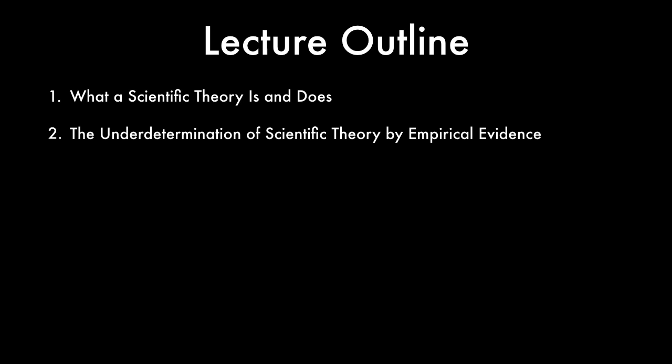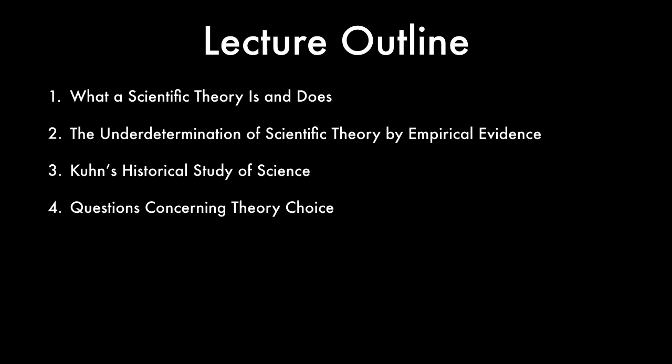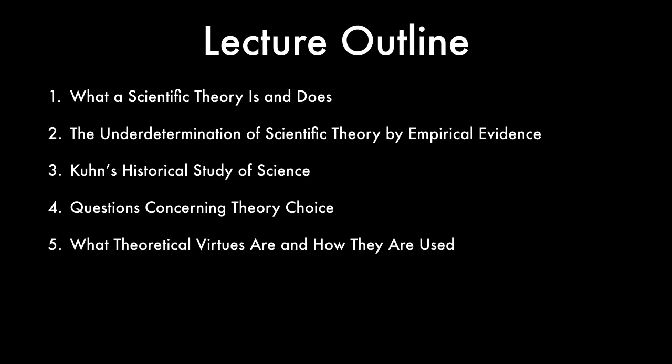Topic two: the underdetermination of scientific theory by empirical evidence. Topic three: Kuhn's historical study of science. Topic four: questions concerning theory choice. Topic five: what theoretical virtues are and how they are used.